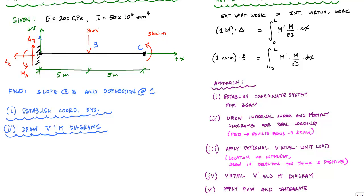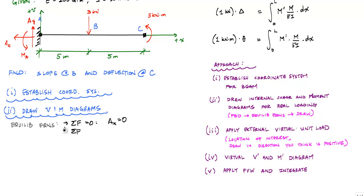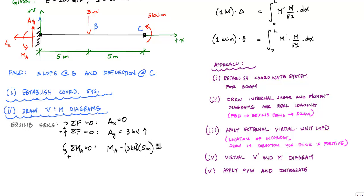Applying the equilibrium equations: sum of forces in the horizontal gives A_x equals zero. Sum of forces in the vertical, positive upward, gives A_y equal to 3 kilonewtons acting upward. Taking moments about point A with counterclockwise positive: M_A minus 3 kilonewtons times 5 meters plus 5 kilonewton-meters equals zero, giving M_A equal to 10 kilonewton-meters counterclockwise.